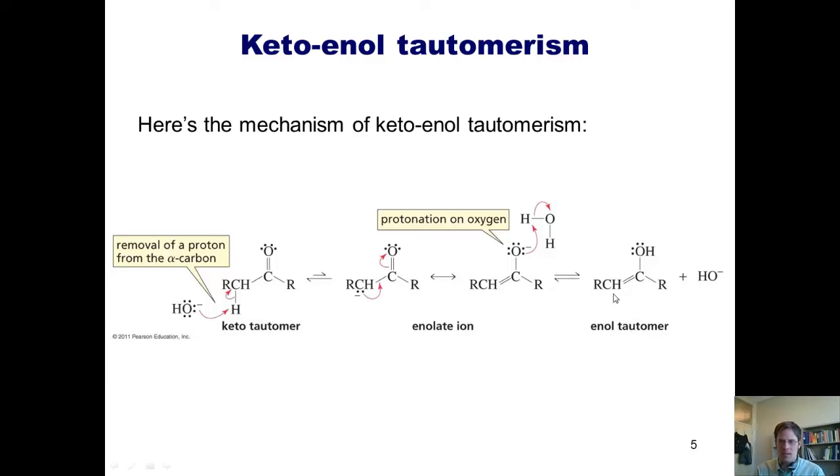You should note that the enol-tautomer is called an enol because it contains both an alkene and an alcohol. So if we look at this, you'll see a carbon-carbon double bond, an alkene, and an OH. That's an alcohol OH. Someone, some time ago, decided to take the word alkene and the word alcohol and squish them together into one word called enol. So that's where that word arises.